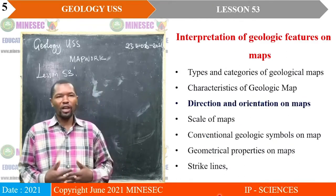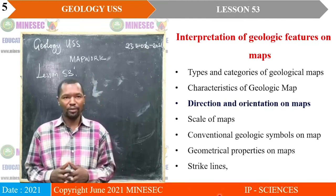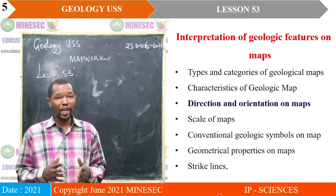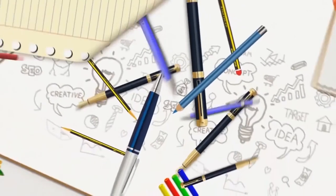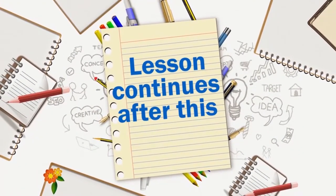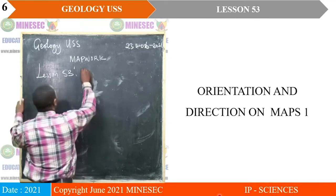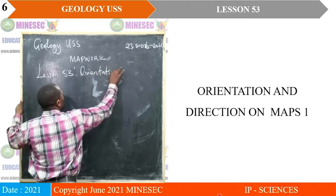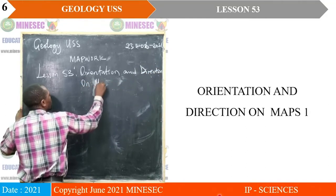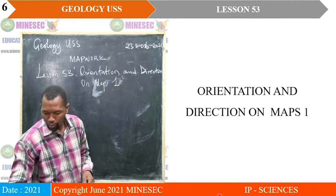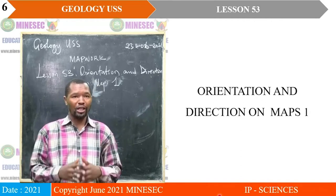We are still under the lesson map, still under the topic map work. We saw types and categories of geological maps, and we also saw characteristics of geological maps. Today we are going to concentrate to look at direction and orientation on maps. Our lesson 53 is titled Orientation and Direction on Maps 1, and there is a second part of the lesson that will be focused on grid references.